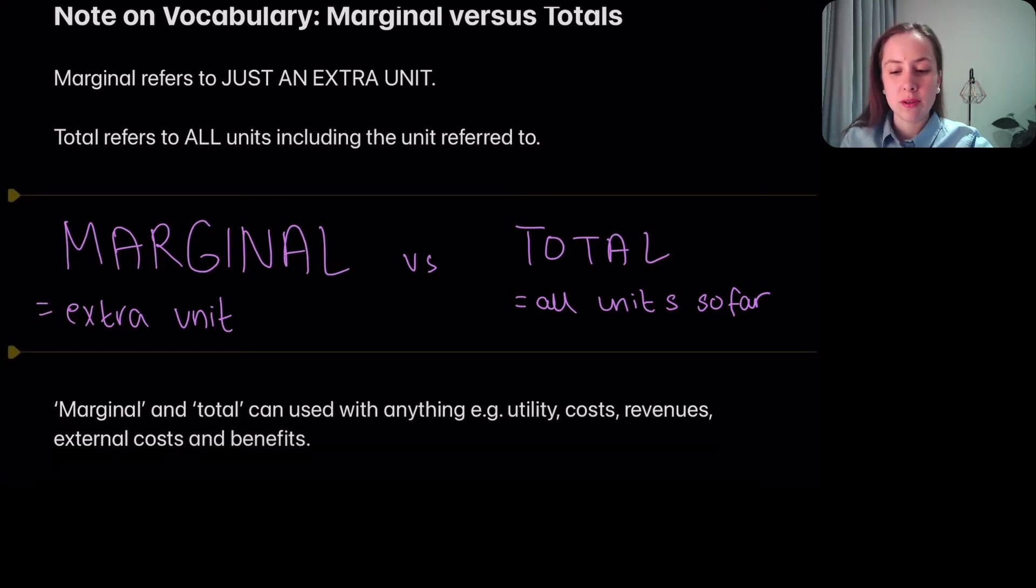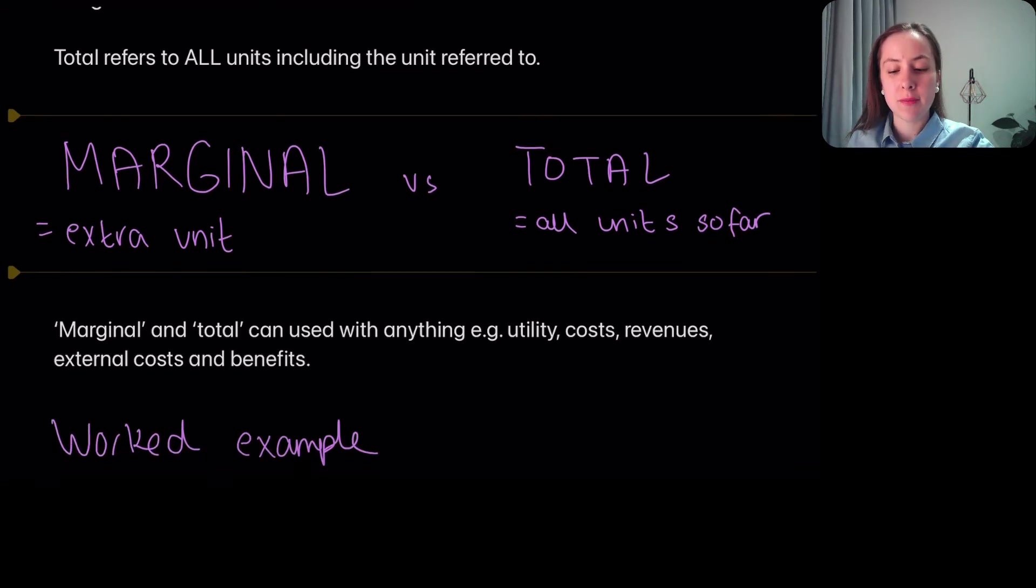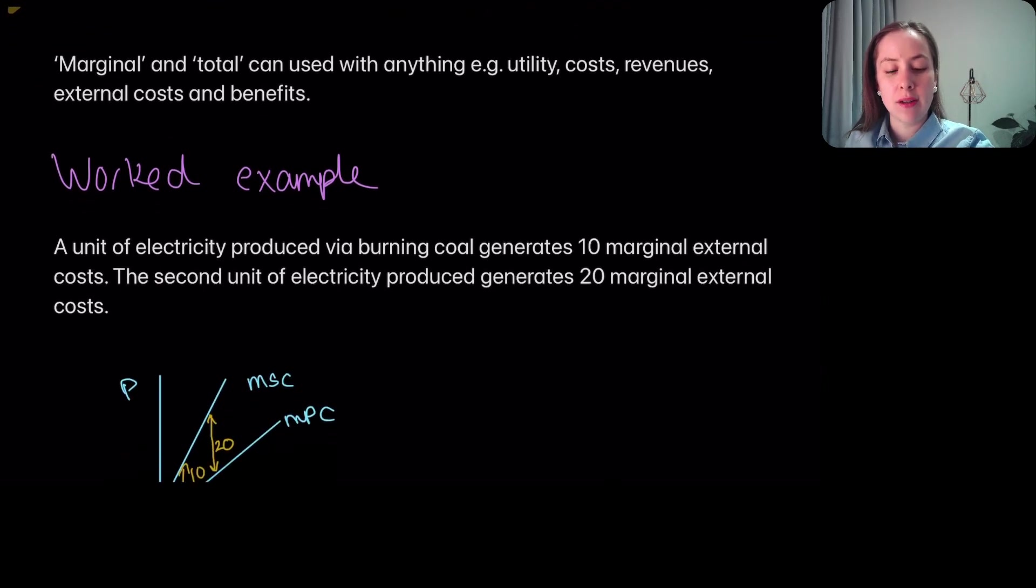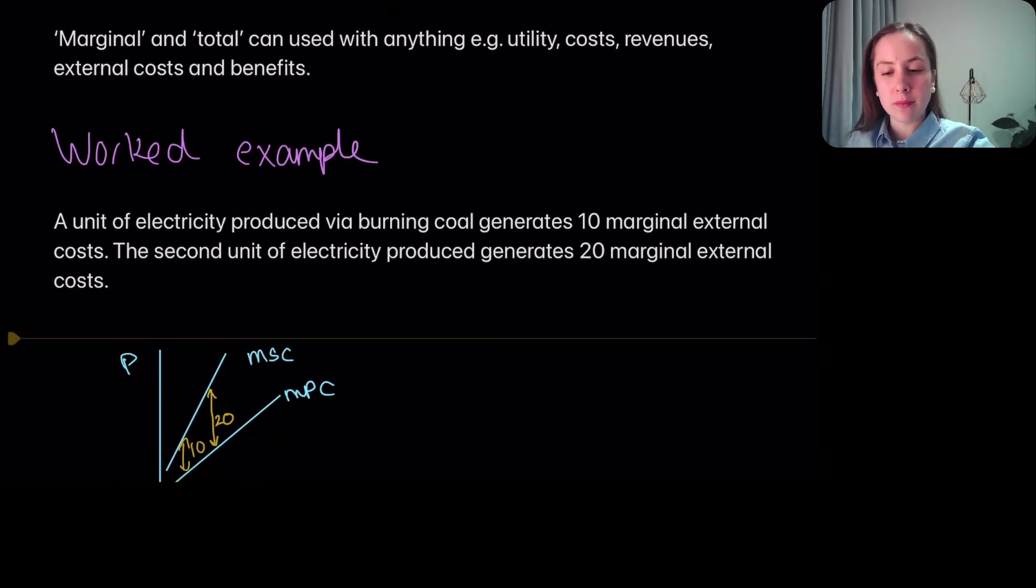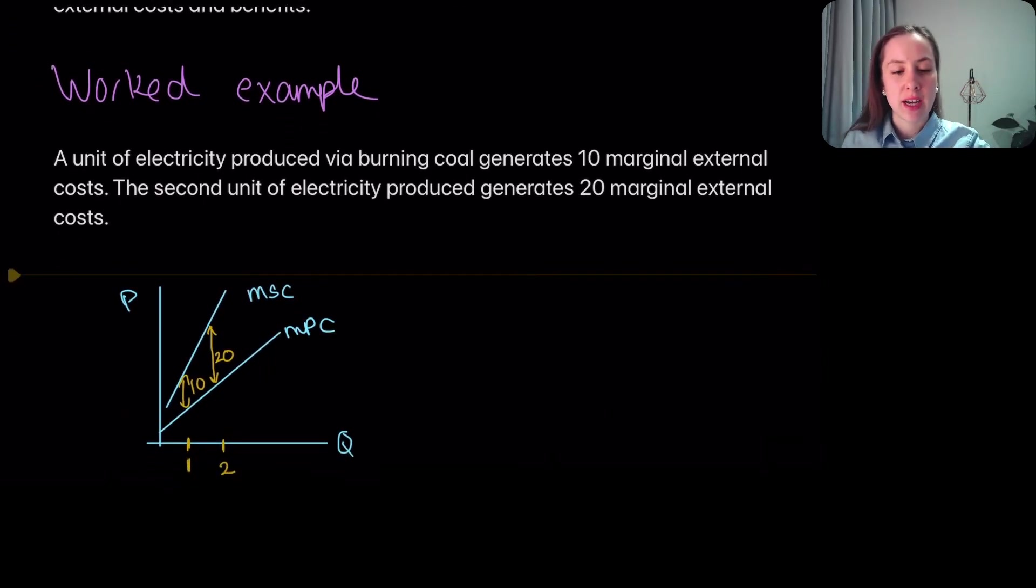And then total is actually all of the units so far. So all the utility for all the units made so far, all the costs, the total cost—literally the total cost for all the units produced so far, total revenue, and so on. You can apply it to anything.